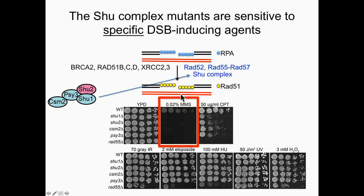One puzzling observation is that disruption of the SHU complex members leads to sensitivity to the DNA damaging agent methylmethanesulfonate (MMS), but not to many other DNA damaging agents. We see mild sensitivity to the topo-1 inhibitor camptothecin, but no sensitivity to ionizing radiation, etoposide which causes double-strand breaks, hydroxyurea which stalls dNTP pools, UV which causes thymine dimers, or hydrogen peroxide which causes oxidative damage. Whereas RAD55 shows a broader range of sensitivity, suggesting the SHU complex is important for repairing specific types of DNA lesions.